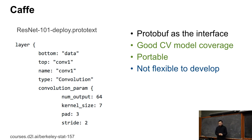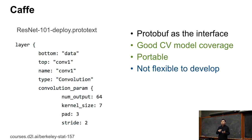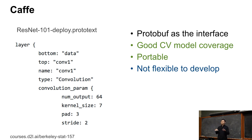Caffe has really good CV model coverage — there are a bunch of convolution networks we'll teach next week. It's also portable, meaning it's a single binary you can grab and run everywhere. But it's not so flexible if you want to do Python-level interactive programming — that's very hard. Also, the single network definition shown here is actually 4,000 lines of code for a single network.